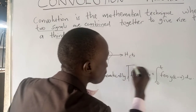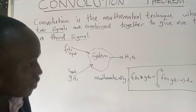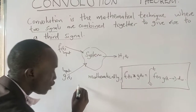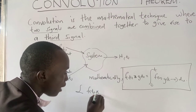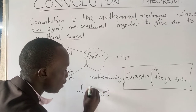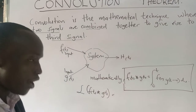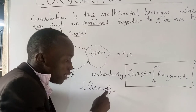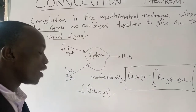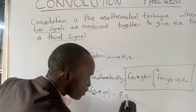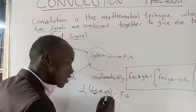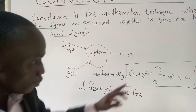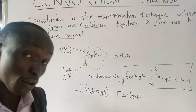Now, if we take the Laplace transform of f(t) and g(t) — those two signals — we move from the t domain to the s domain. From the t domain, f(t) becomes F(s), and g(t) becomes G(s). These two transforms are very important in convolution theory.